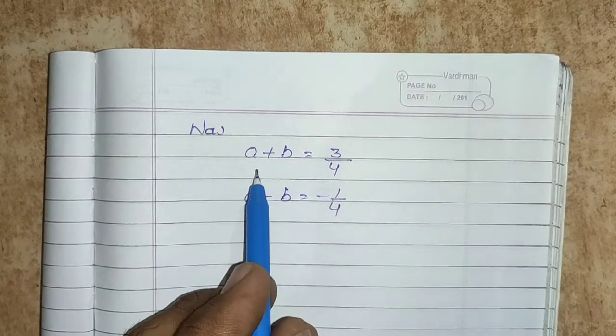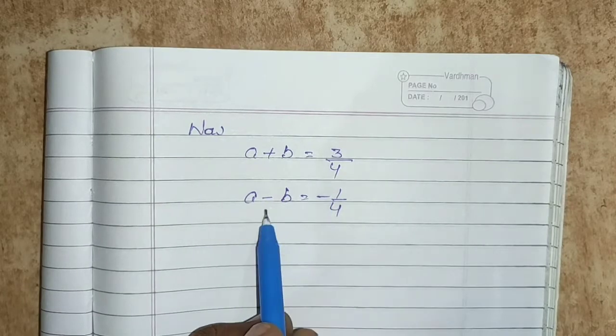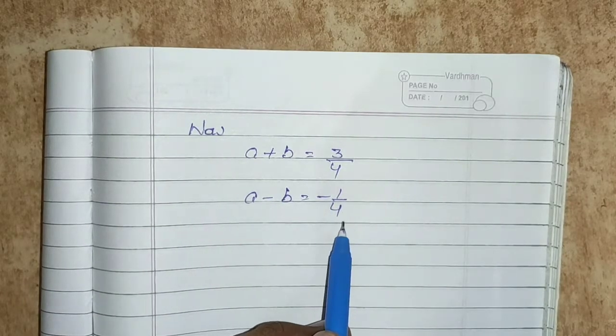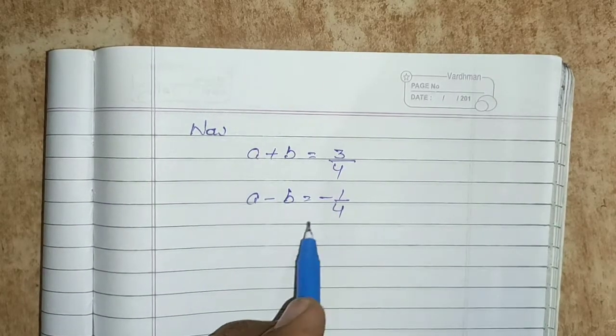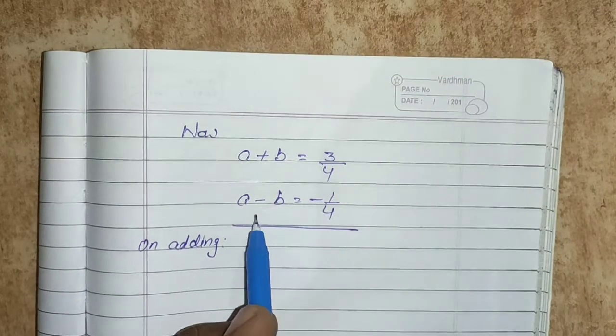We have equation 3: a plus b equals to 3 by 4, and equation 4: a minus b equals to minus 1 by 4. Since one has plus b and the other minus b, we add to find a.